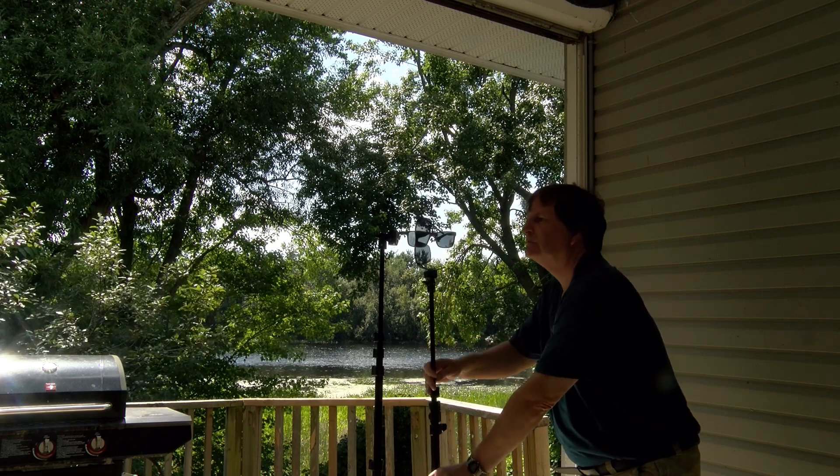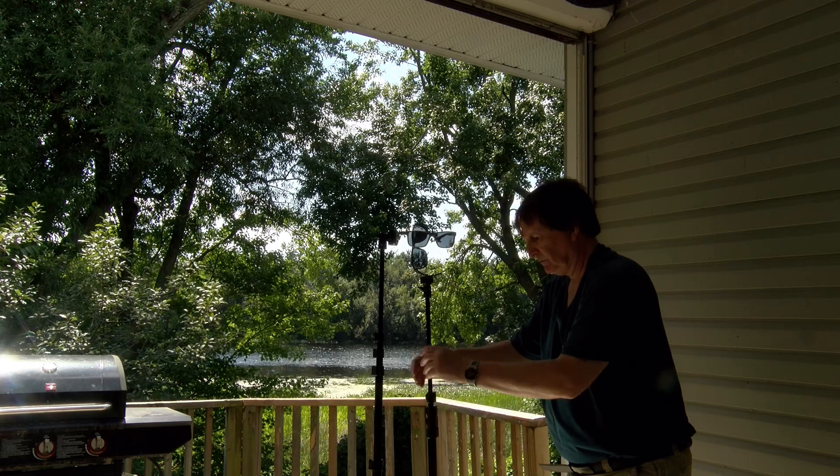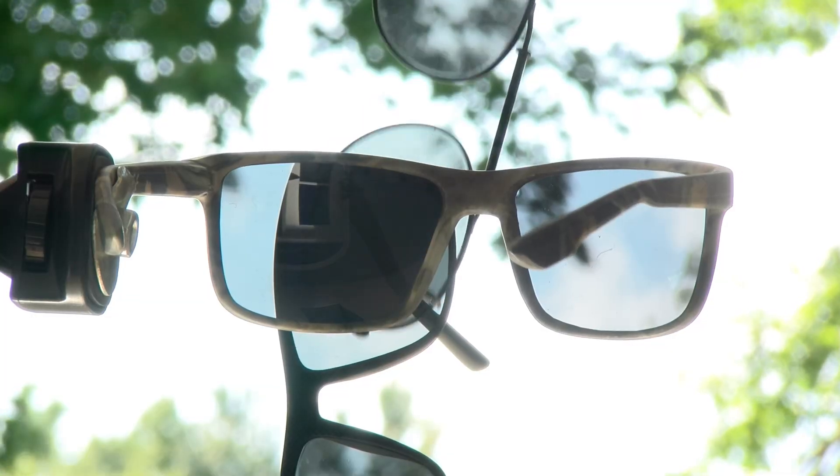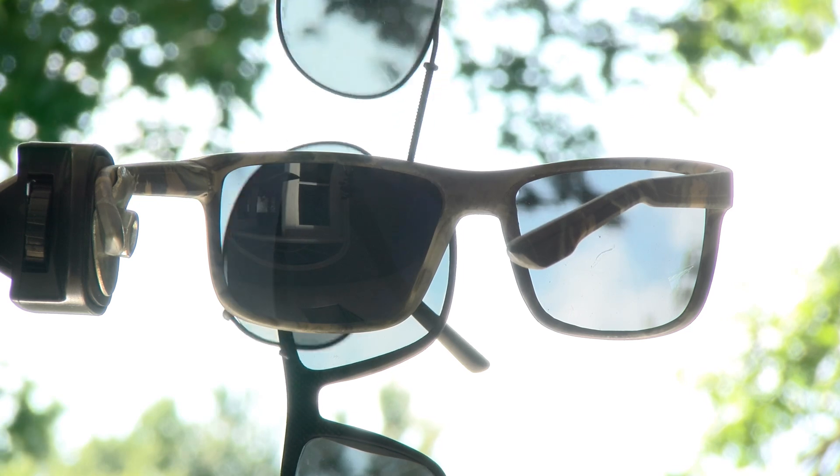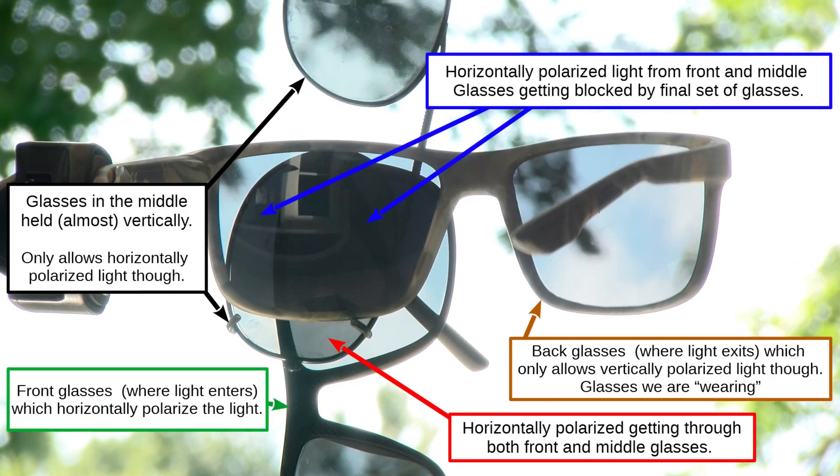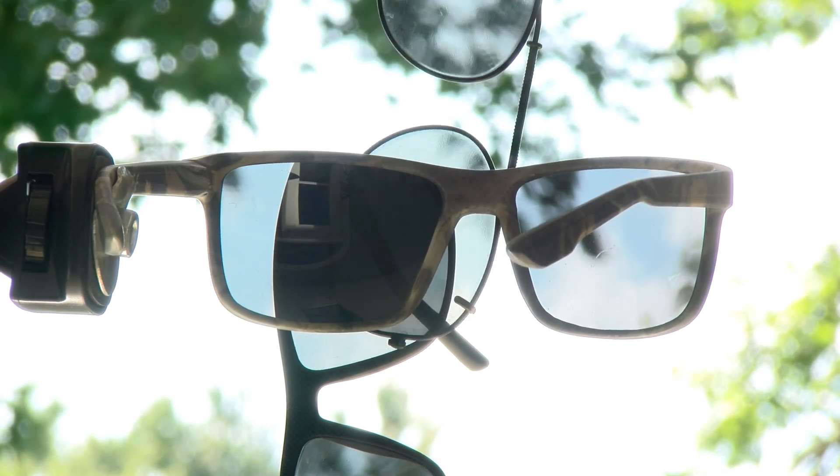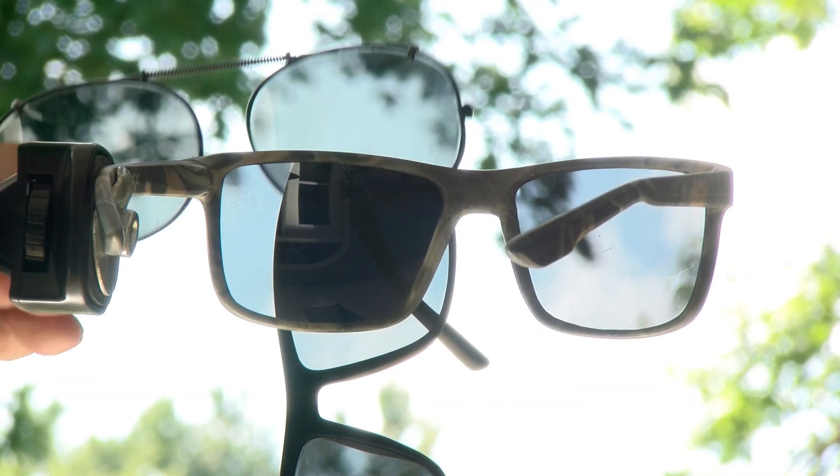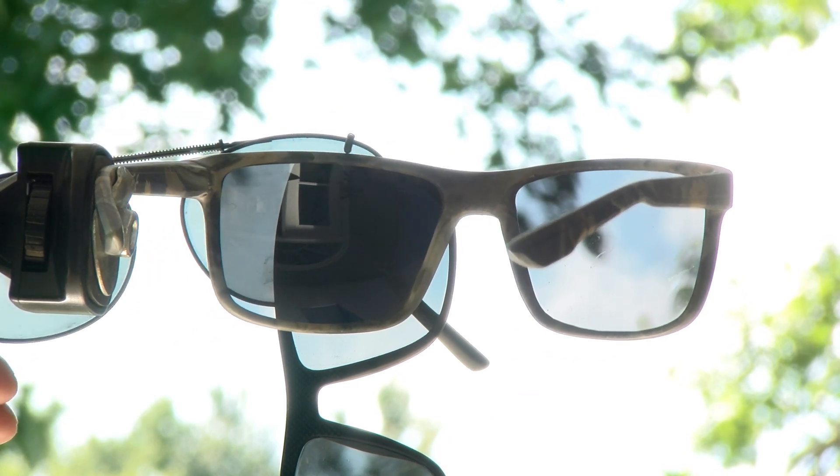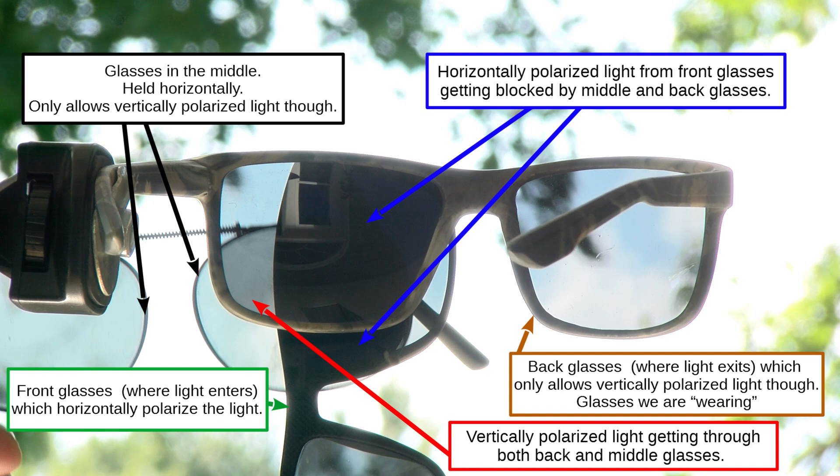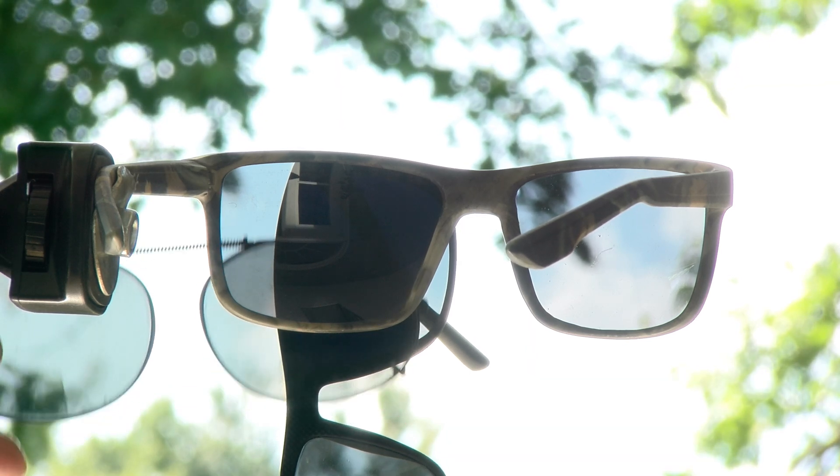Now the fun starts. What happens if you put a third pair of glasses in between the original two? Well, hold the third pair of sunglasses, the middle ones vertically, and you'll let the already horizontally polarized light from the first set of glasses through, which the glasses you're wearing will block, and everything will be dark. Now hold the middle pair of sunglasses in their normal orientation, and they'll block all the horizontally polarized light from the first set of sunglasses, and the glasses you're wearing will not actually get any light, and everything will still be black.